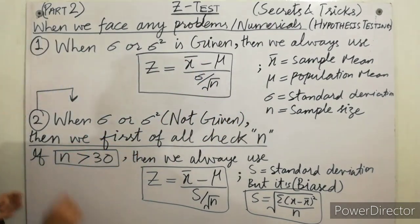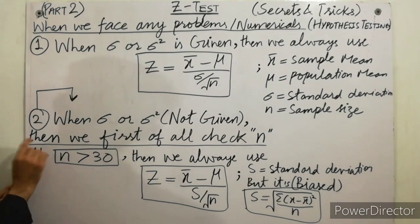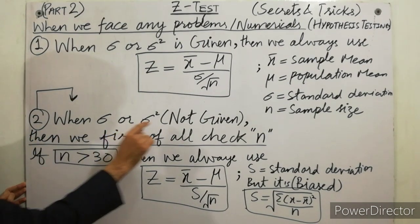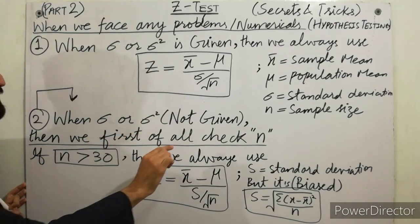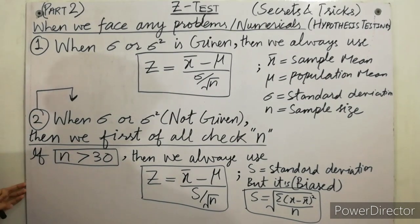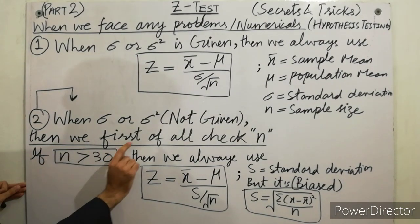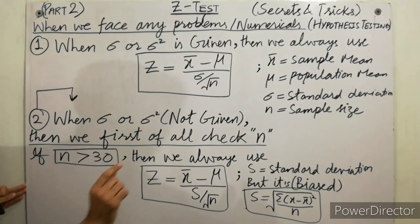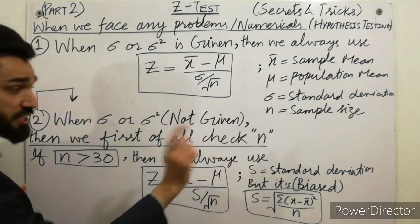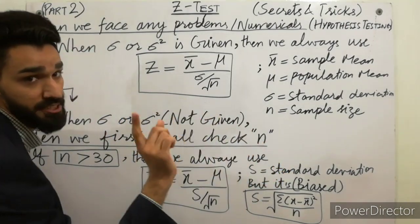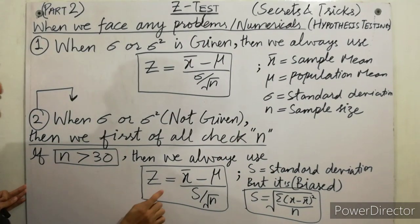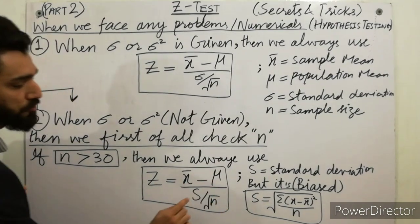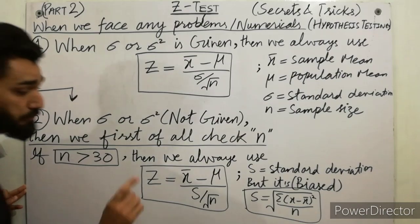The second part is very interesting: when sigma or sigma squared is not given in the problem, then we first check sample size. If sample size is greater than 30, then we always use Z test with formula Z = (x̄ − μ) / (S / √n).